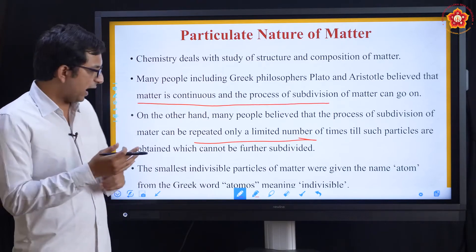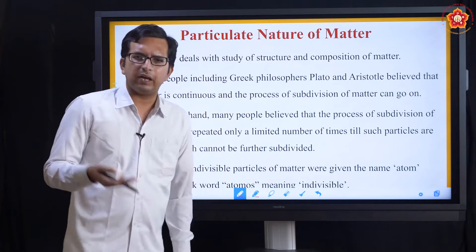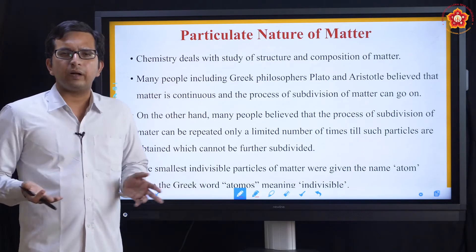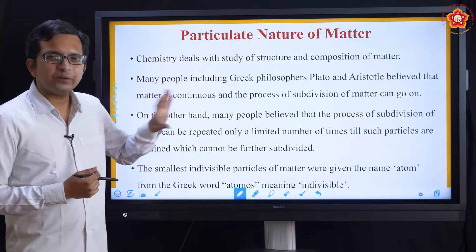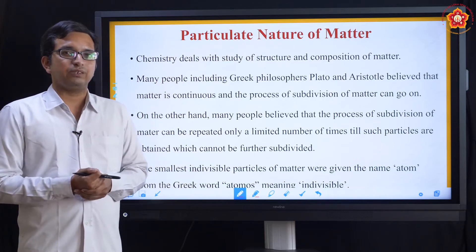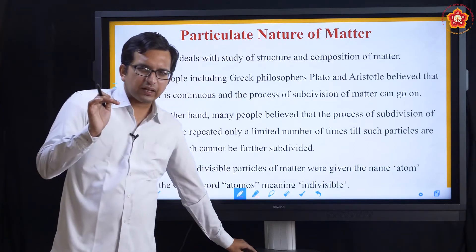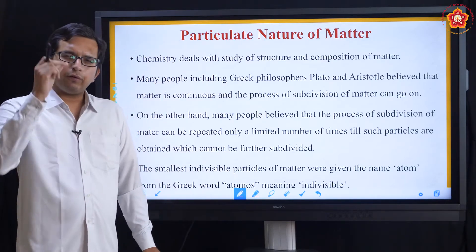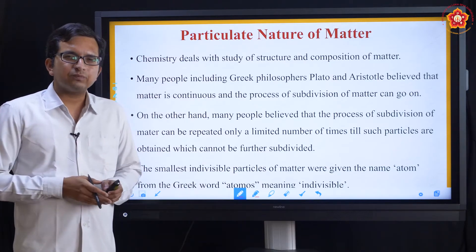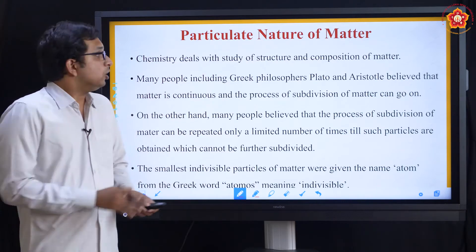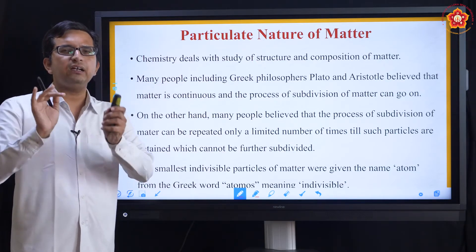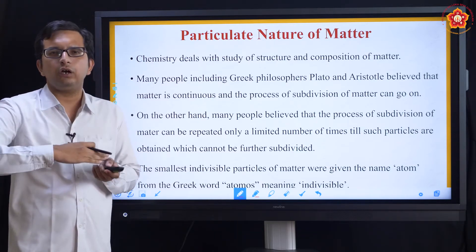From 'automos' we got the word 'atom'. Even Indian scientists — we call them Maharshis — Maharshi Kanada proposed about atoms long back. But generally, foreign scientists tend to propose these theories at the international level, which is how their names come about. Basically, we believe that you can keep cutting matter, but there will be one smallest particle which we call an atom — something which is indivisible, meaning you cannot go further.